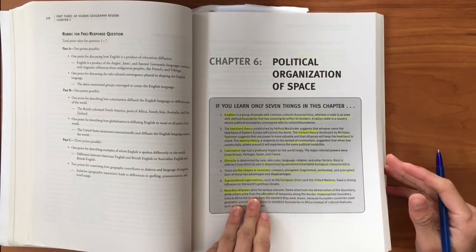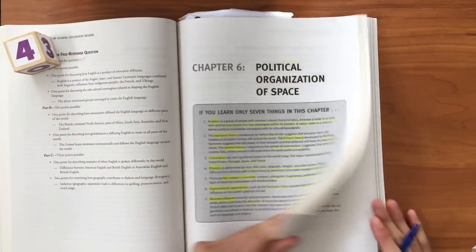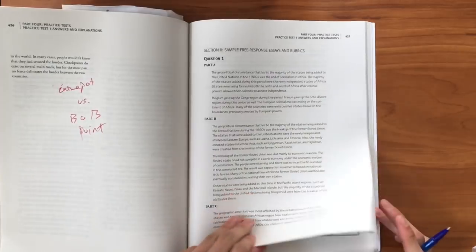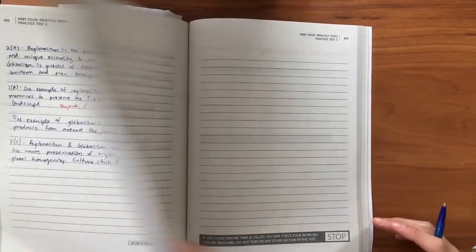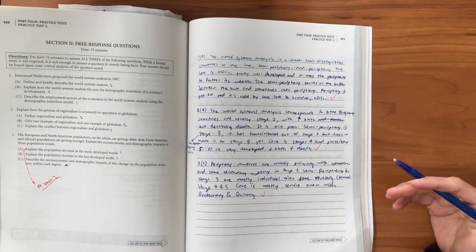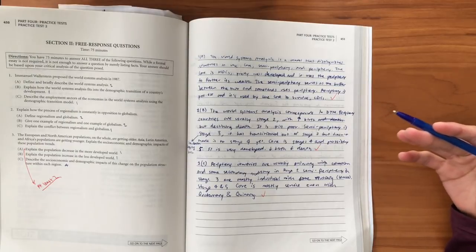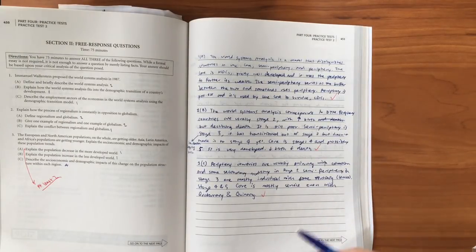The fourth tip is definitely to do more FRQs. FRQs are good because it's half your exam, so you need to write a lot and you've got to make sure you know what you're doing. Once again, vocabulary is important.